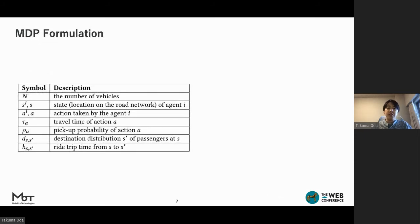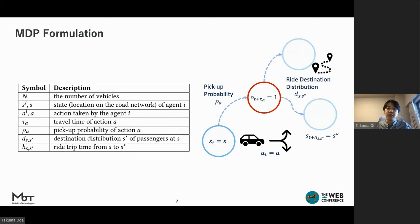Right, let's move on to the problem definition. First, we formulate Markov decision processes in a single agent setting. These are the notations we used in this work. The state S is the agent position on the road network, which corresponds to a node in the strongly connected directed graph. The action A stands for the edge to the next road that the agent follows. Executing A causes a matching with passengers with probability rho, and a state transition subject to destination distribution of passengers, denoted D. This ride trip takes a time step H, which depends on the road network distance between origin and destination.